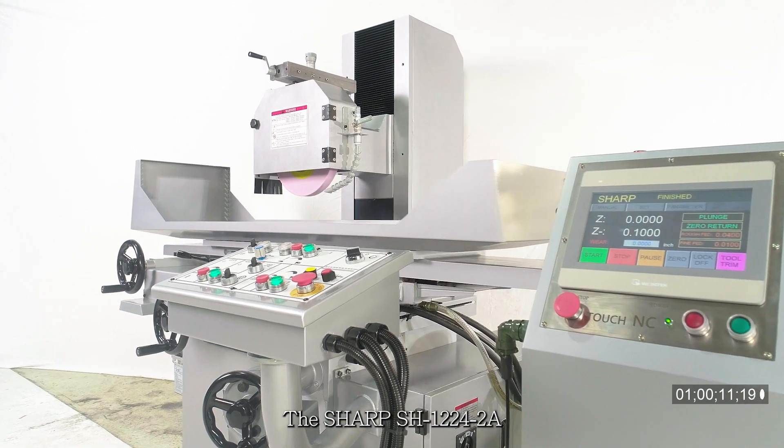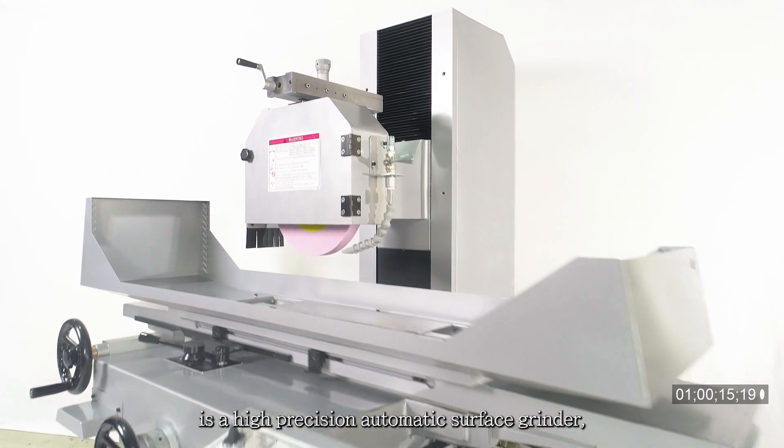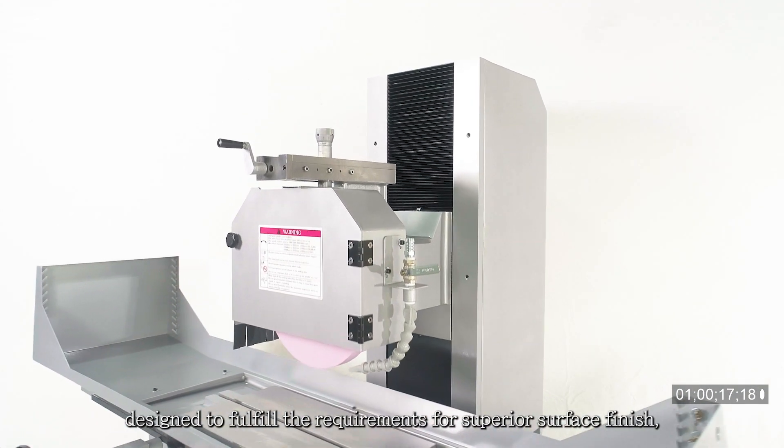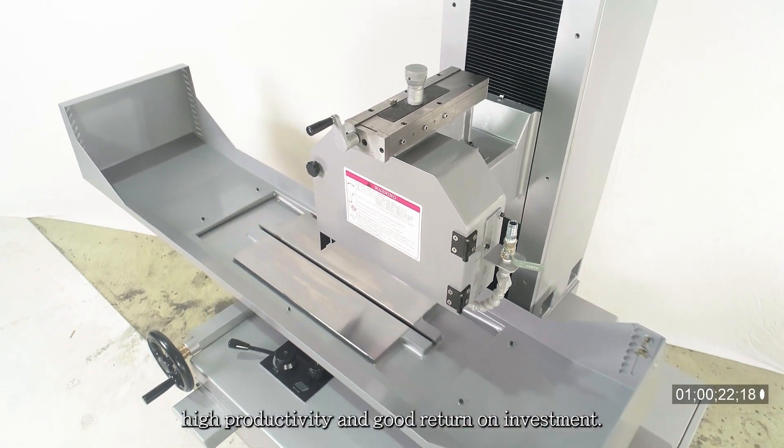The SHARP SH-1224-2A is a high-precision automatic surface grinder designed to fulfill the requirements for superior surface finish, high productivity, and good return on investment.